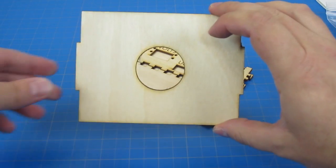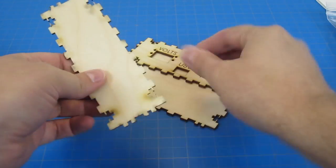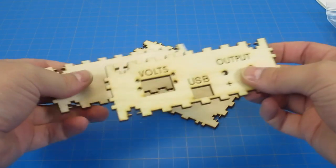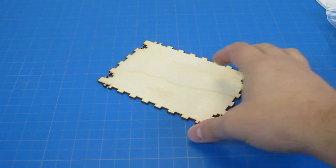We have our cross beam for the mounts, the back and front of our box, and the bottom plate.